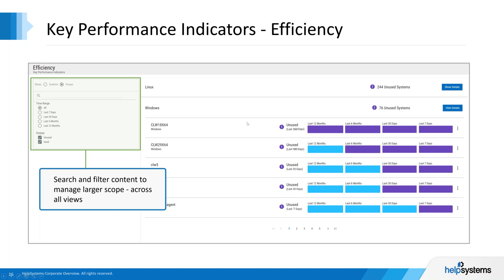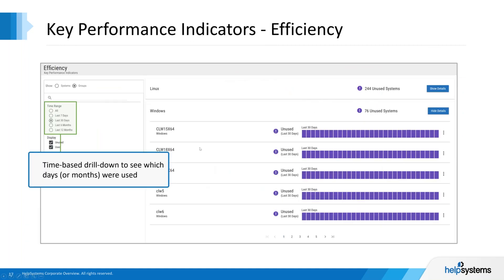The search and filtering applies not just to efficiency but also to the health and risk scores. You can do a time-based drill-down to see which days or months the system was unused — if you're looking at the last 30 days you'll get one notification per day, and if you look at the last seven days you get more granular indicators. You can drill down to see exactly which days something was happening and whether there is a systematic or seasonal behavior that keeps repeating across different systems — a very powerful way of analyzing systems and finding those that are not being used efficiently.